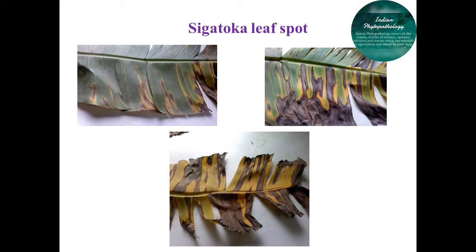In 1912, it appeared in epidemic form in the Sigatoka valley in Fiji, which is why it is named Sigatoka disease of banana. The symptoms include light yellow or brownish-green streaks observed on leaves. These streaks become linear, oblong, brown to black in color in later phases.